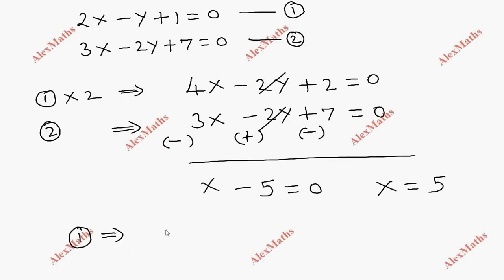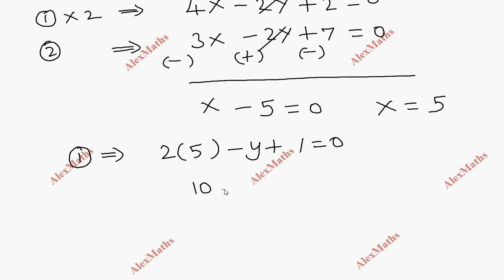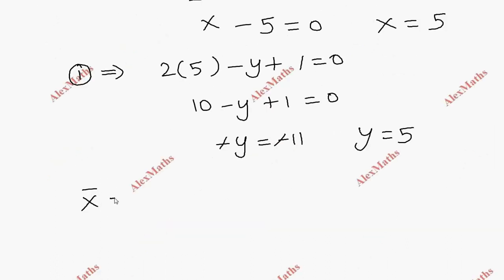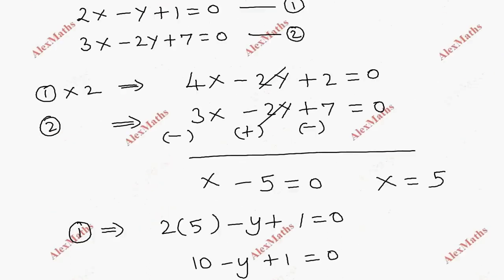Substituting x = 5 into the first equation: 2 × 5 - y + 1 = 0. So 10 - y + 1 = 0, which gives -y = -11, so y = 11. Therefore, mean x̄ = 5 and ȳ = 11. The first part is complete.